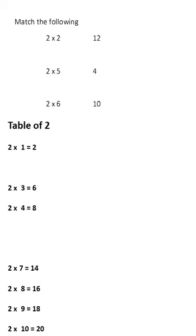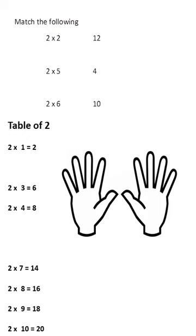Next, match the following question. 2 multiplies 2, 2 multiplies 5, 2 multiplies 6. We know, table of 2. Table of 2 means same like counting 2's. All of you take your 2 hands. Okay? Then, count in 2's.